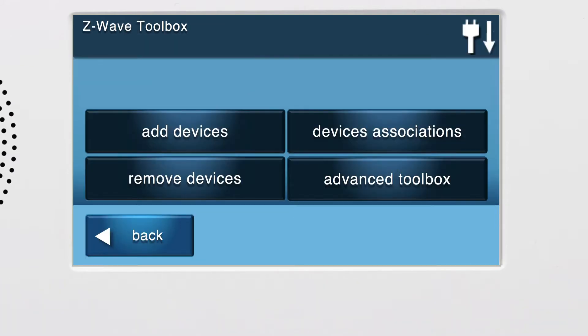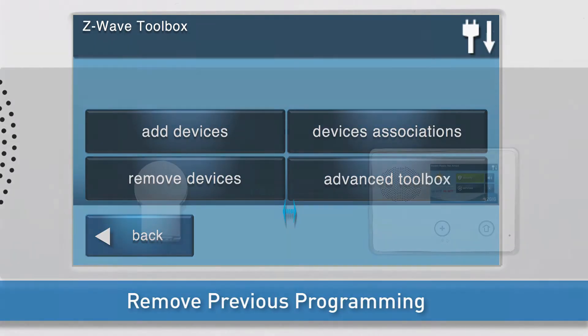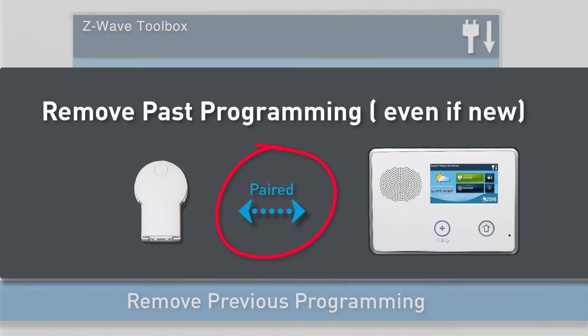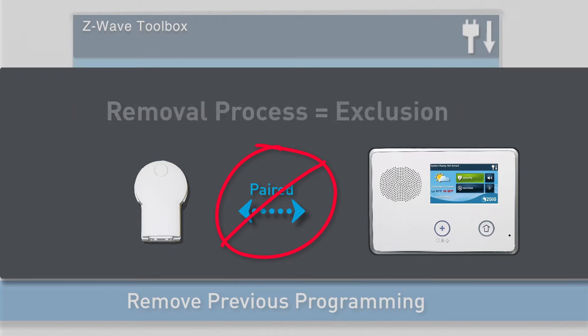You are now in the Z-Wave Toolbox. Z-Wave devices such as the Lamp Module may need to have past programming removed before they can be added to a panel, even if they are new. We do this by performing the removal process, which is also known as exclusion.